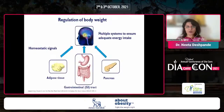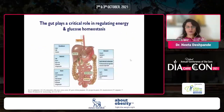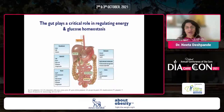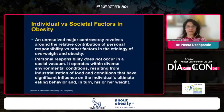The regulation of body weight, in a nutshell: you have homeostatic signals, the brain, different organs, and nutrient sensing — all of them regulate body weight. The gut plays a very critical role in regulating energy and glucose homeostasis. Right from the oral cavity all the way down to the rectum, different hormones act in concert sending signals to the brain.